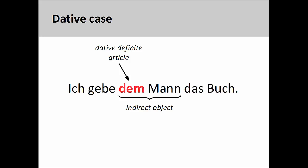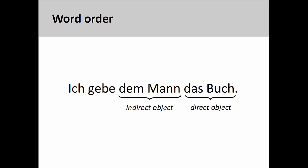For example, 'Ich gebe dem Mann das Buch' — I give the book to the man. In other words, the dative case basically indicates to whom an action is performed. Another example: 'Ich zeige dem Mann das Buch' — I show the book to the man. There are a few rules governing word order, or syntax, when you have both a direct and indirect object in a sentence. For the time being, it is important to know that if both objects are preceded by a definite article, the indirect object comes first.